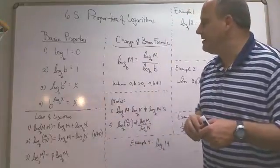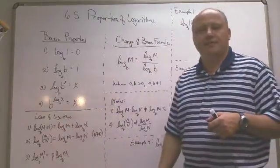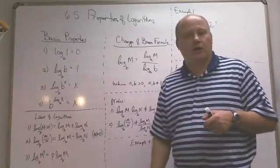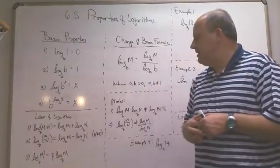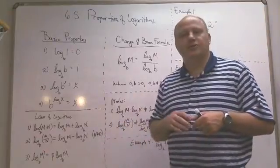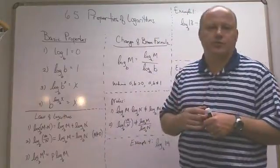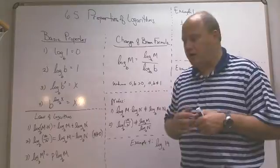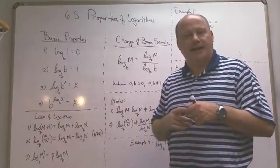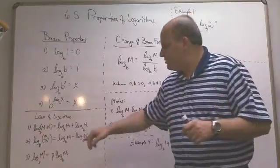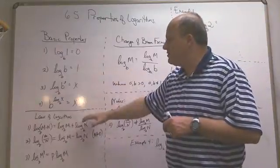Now the laws of logarithms: the product law states log base B of (M times N) equals log base B of M plus log base B of N. The quotient law states log base B of (M divided by N) equals log base B of M minus log base B of N, where N cannot be zero. The power rule states log base B of M to a power P equals P times log base B of M — the power can be written as a factor out front.